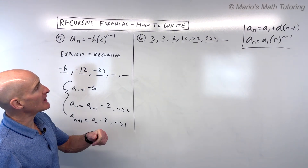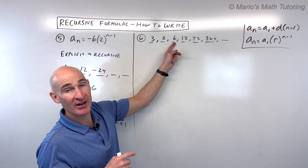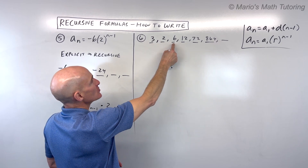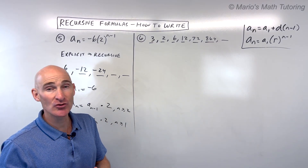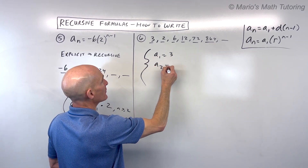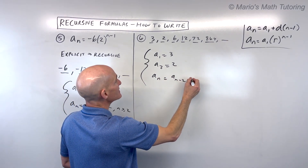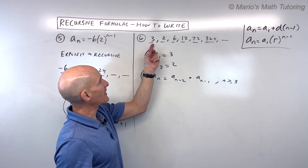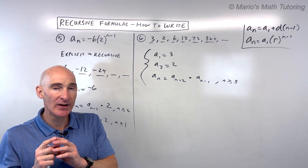For number six, we've got 3, then 2, then 6. It goes down, then it goes up — how does that happen? It looks like we're multiplying: 3 times 2 is 6, 2 times 6 is 12, 6 times 12 is 72. This is kind of like the Fibonacci sequence, except instead of adding the two previous terms, we're multiplying them. So the recursive formula tells the person the first two terms — 3 and then 2 — and then a sub n equals a sub n minus 2 times a sub n minus 1, for n greater than or equal to 3.